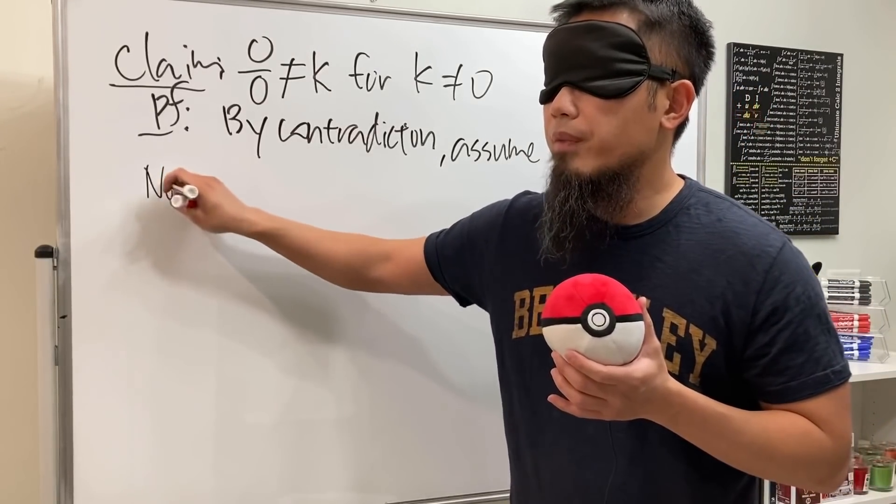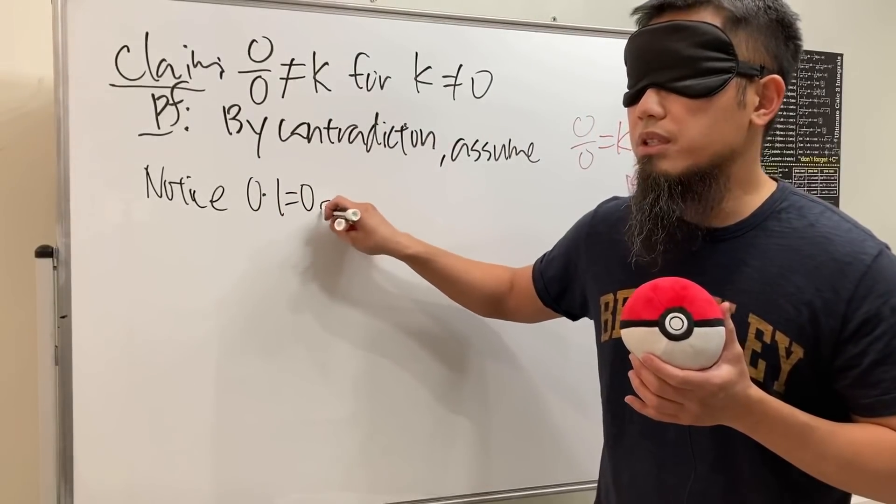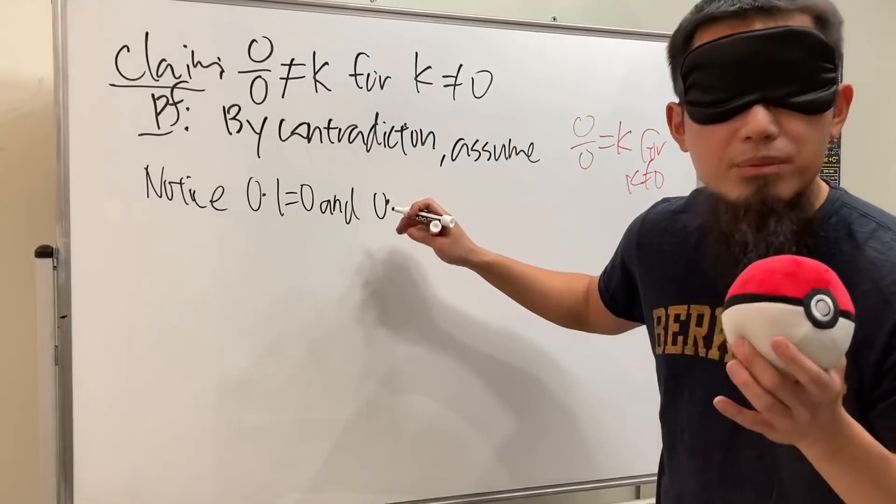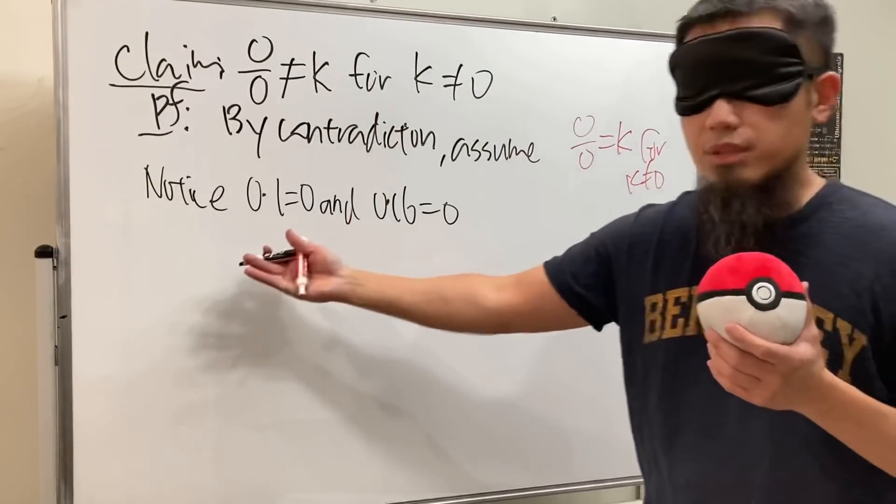Note, well notice, zero times one is equal to zero, good. And zero times what's your favorite number? 16, okay. So 16, this is also equal to zero. As you can see they are both equal to zero.